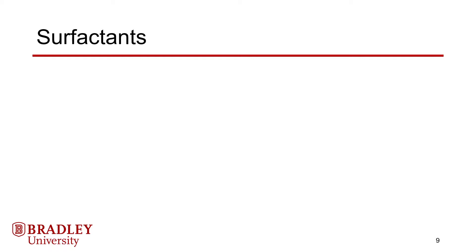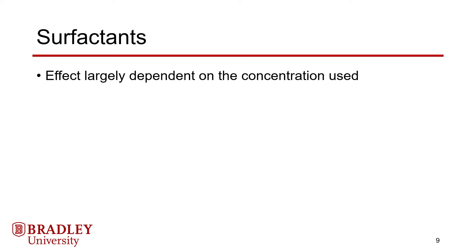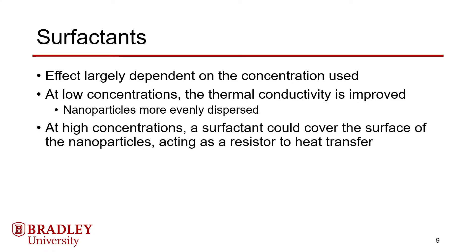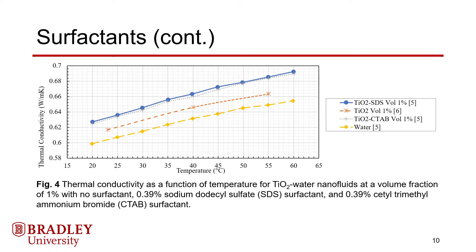The effects of surfactants were also studied. It was found that the effect is largely dependent on the surfactant concentration used. Specifically at low concentrations, surfactants improve the thermal conductivity since they better disperse the nanoparticles. However, at sufficiently high concentrations, the surfactant can cover the surface of the nanoparticles, acting as a resistor to heat transfer. Shown here are various sets of TiO2 water nanofluid — one contains no surfactant, and others contain sodium dodecyl sulfate and cetyltrimethylammonium bromide as surfactants. The concentration used was 0.39%, which was low enough to observe an improvement in thermal conductivity compared to the original nanofluid in both cases, supporting the conclusion that surfactants can improve nanofluid thermal conductivity.